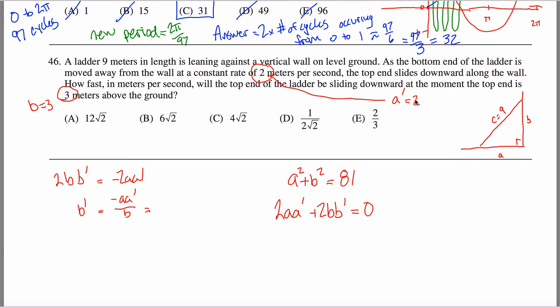So if I knew what A, A prime, and B were, I'd be done with the problem. I do know A prime and B, but I don't know A. Well, A represents this length right here, specifically this length when B equals three. So I can solve for A over here by saying A squared plus three squared must equal 81. So A squared must equal 72. So A is equal to, this is 36 times two, so I can call it six root two.